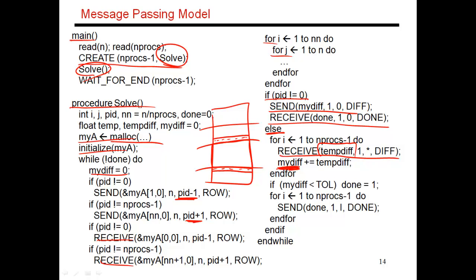So ultimately, when you're done, or at least thread 0 checks to see if the total diff value is less than the threshold. Accordingly, the value of done is then sent to all of these other threads that are waiting for it. So all of this is being done by PID 0.